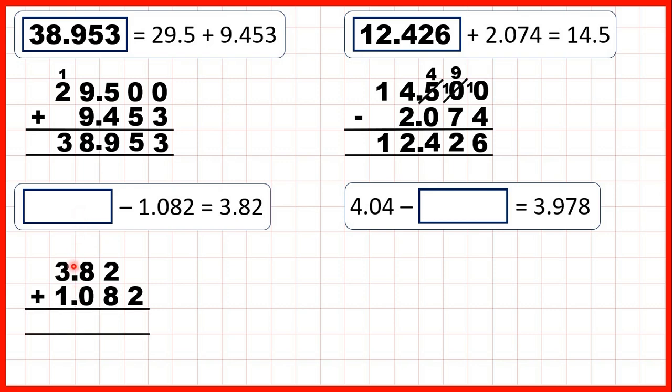So we can work out 3.82 plus 1.082 to find our missing number. We have our decimal points lined up. We can write zeros in empty squares, and copy the decimal point down into our answer. Now, 0 plus 2 is 2, 2 plus 8 is 10, so 1 0, 1 plus 8 plus 0 is 9, and 3 plus 1 is 4. So our missing minuend is 4.902.